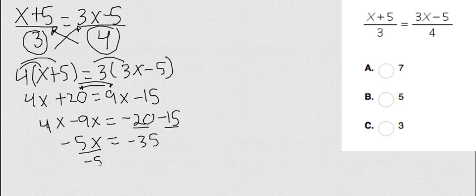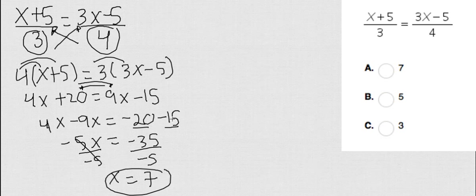And finally, I can just divide both sides by negative 5. Negative 35 over negative 5 is just positive 7. And that is my answer.